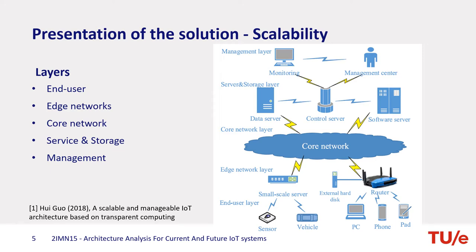The service and storage layer consists of a data server, software server, and control server. The data server stores data from the edge network layer and provides the data for processing. The software server stores operating system files and applications available to the edge device. The control server controls and manages the data server and the software server. The management layer mainly manages servers from the service and storage layer and assigns tasks to the control server, like adding or updating software.